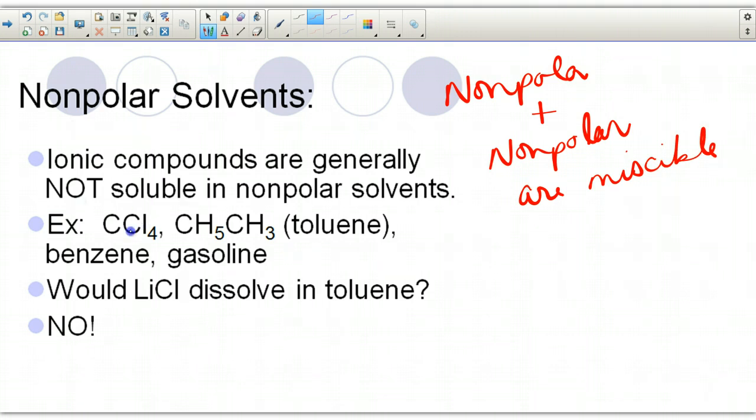Some examples of non-polar solvents are CCl4 carbon tetrachloride, CH3CH3 toluene, benzene, and gasoline.